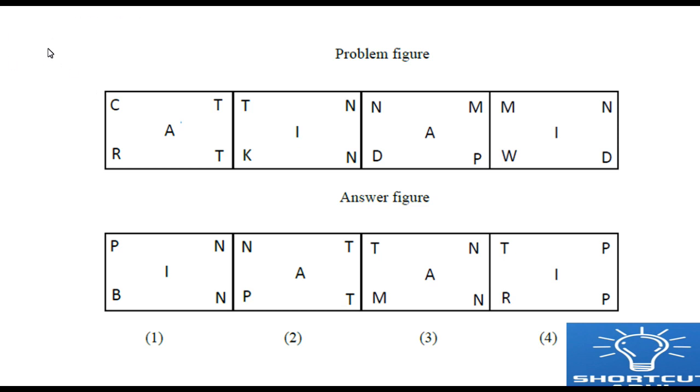Just observe how the elements or numbers or alphabets or symbols they move. For example, hopefully what we will do is just we will read diagonally: cat, rat, tin, kin, nap or pan, dam or mad, mid or dim, win like that we will read. But it is a waste of time. Instead of that...